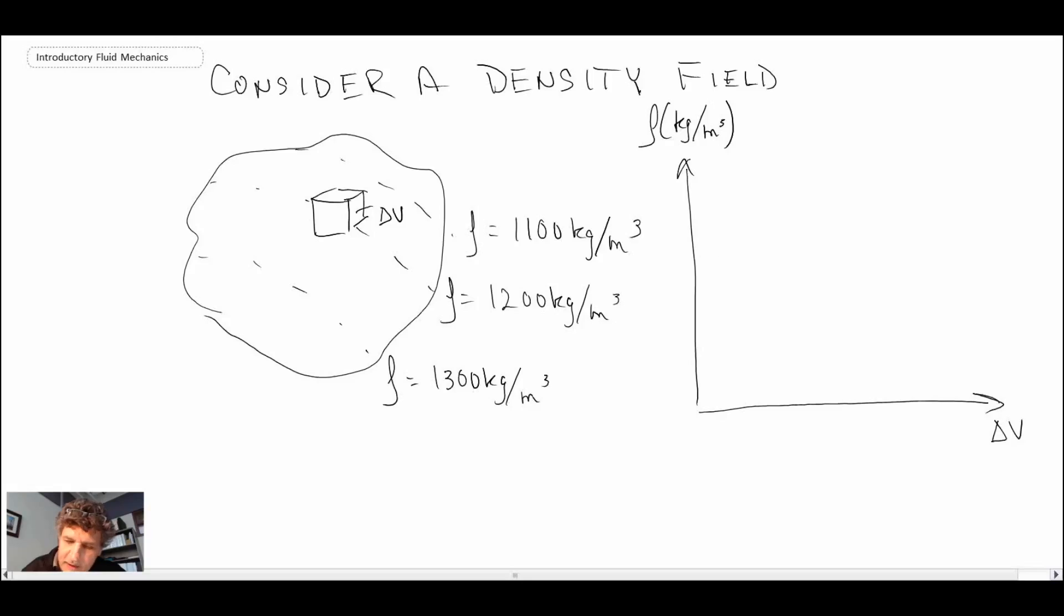Below our 10 to the minus 9 millimeters cubed, the density values are going to be fluctuating all over. But then as the delta V gets larger and larger, you get to a point where you get to what would be a convergence, and then you have convergence in the density.